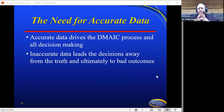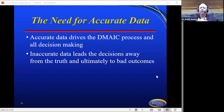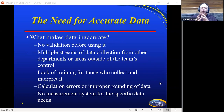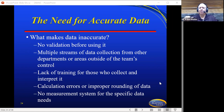The need for accurate data is critical. Accurate data drives the DMAIC process and all decision-making. Inaccurate data leads decisions away from truth and ultimately to bad outcomes, because it's based on fantasy — meaning you're making a decision that is not based on truth and you're going to go in the wrong direction in most cases. So what makes data inaccurate? No validation before using it. In this world with the internet, there are people who write articles with a position and solutions, and many times they write well but their data is very inaccurate.